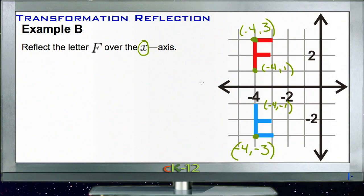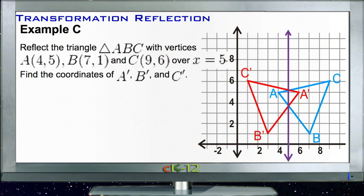Now for part C — reflect triangle ABC with vertices A(4, 5), B(7, 1), and C(9, 6) over the line x = 5. That's the purple line shown here.